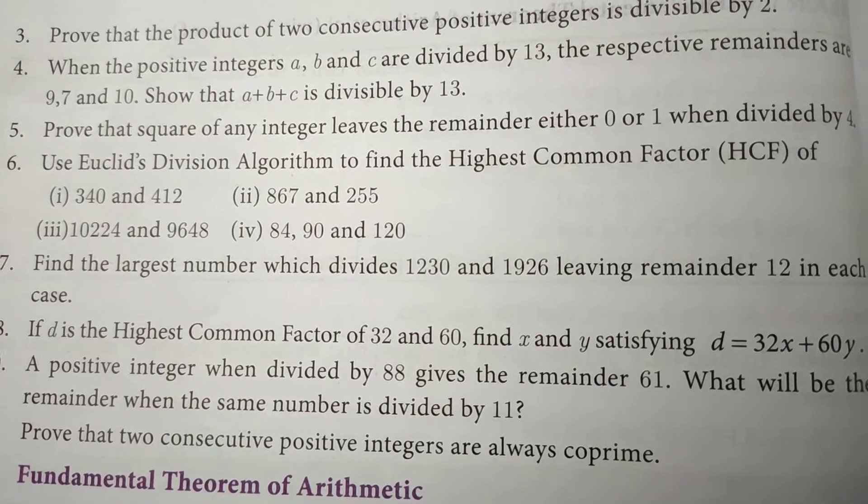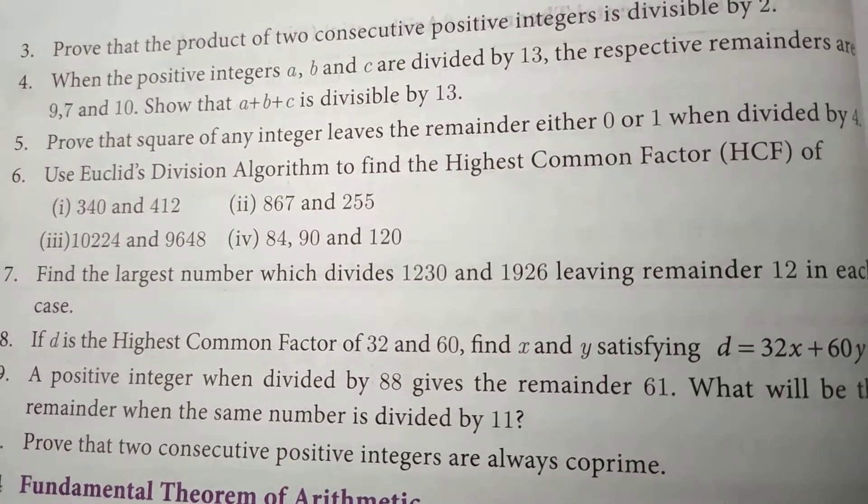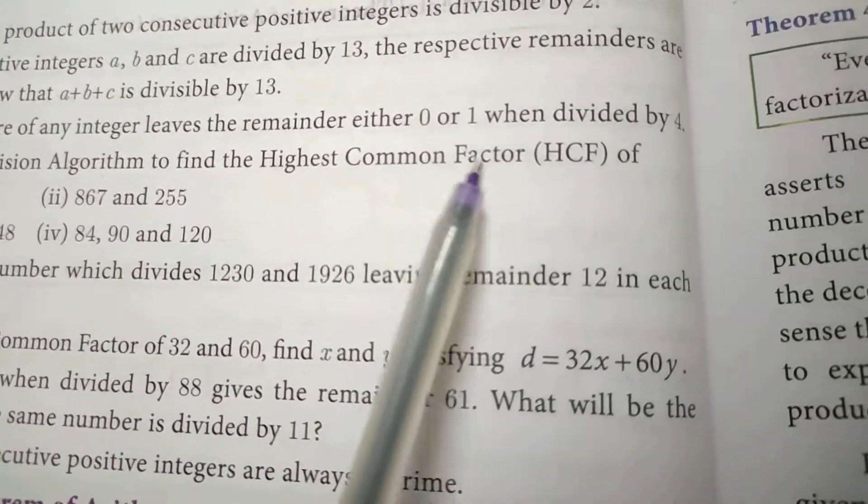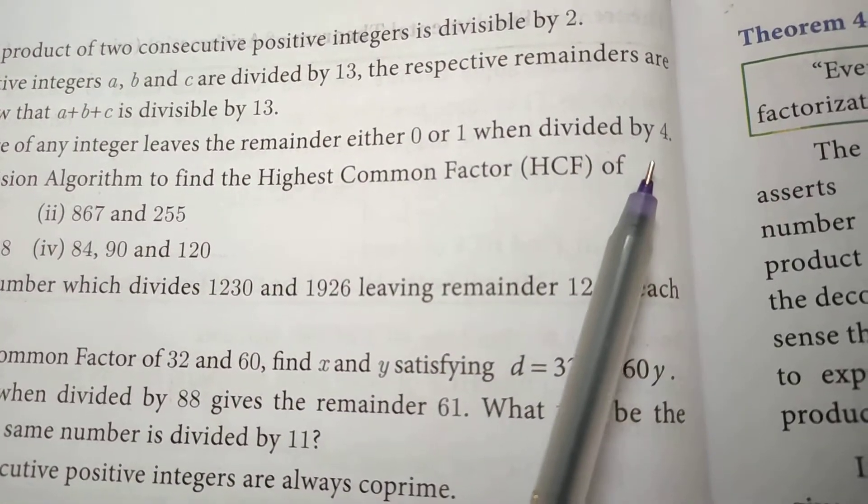Exercise 2.1, 5th sum: Prove that the square of any integer leaves the remainder either 0 or 1 when it is divided by 4.